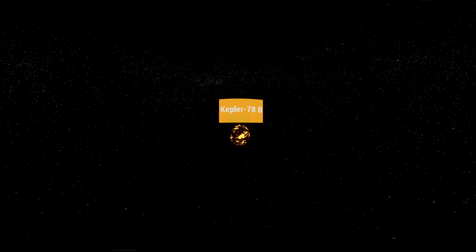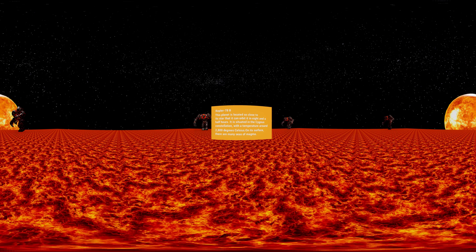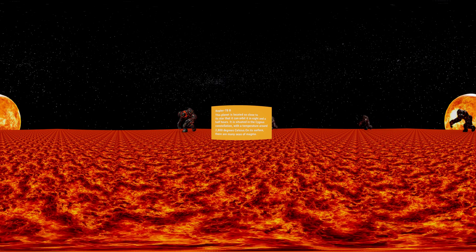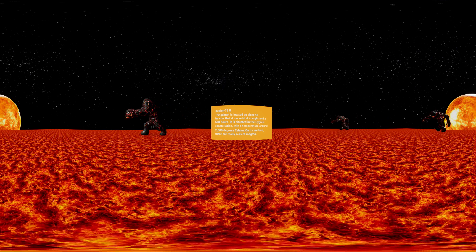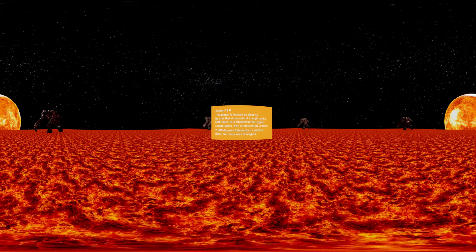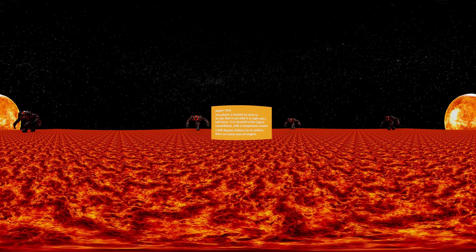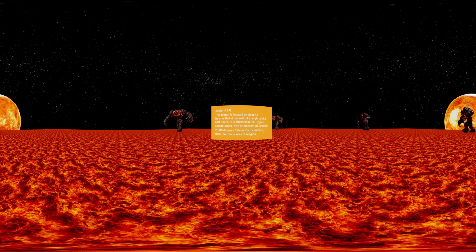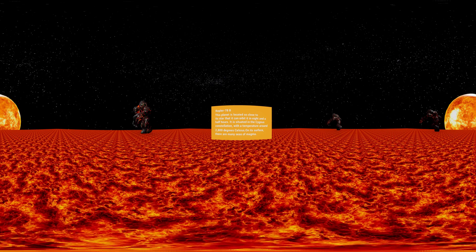Kepler-78b. This planet is located so close to its star that it can orbit it in eight and a half hours. It is situated in the Cygnus constellation with a temperature around 2,800 degrees Celsius. On its surface, there are many seas of magma.